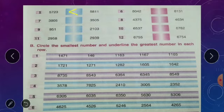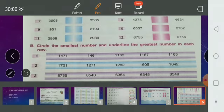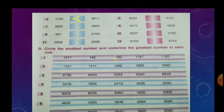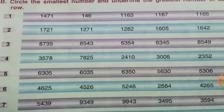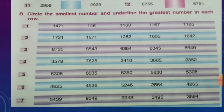Now moving to part B: circle the smallest number and underline the greatest number in each row. First, find which is the smallest and circle it; then find the greatest number and underline it. First row numbers: 1471, 146, 1163, 1167, and 1165.